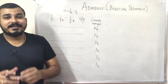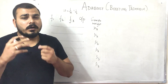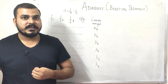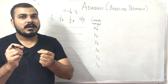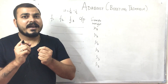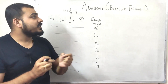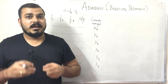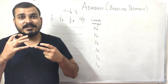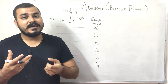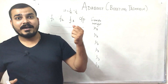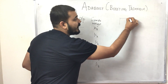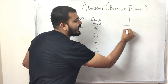In step 2, we create our first base learner sequentially. In AdaBoost, all base learners are decision trees. However, unlike decision trees in random forest, here each decision tree is created with only one depth.